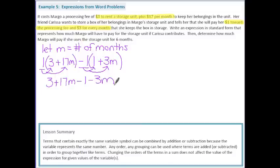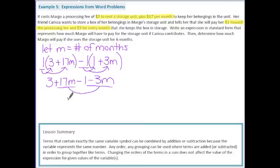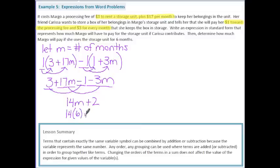Combining like terms: 17m minus 3m gives 14m, and 3 minus 1 gives 2. So the expression in standard form is 14m plus 2. To find how much Margo pays for 6 months, we replace m with 6 and evaluate: 14 times 6 plus 2 equals 86. Margo will pay $86.